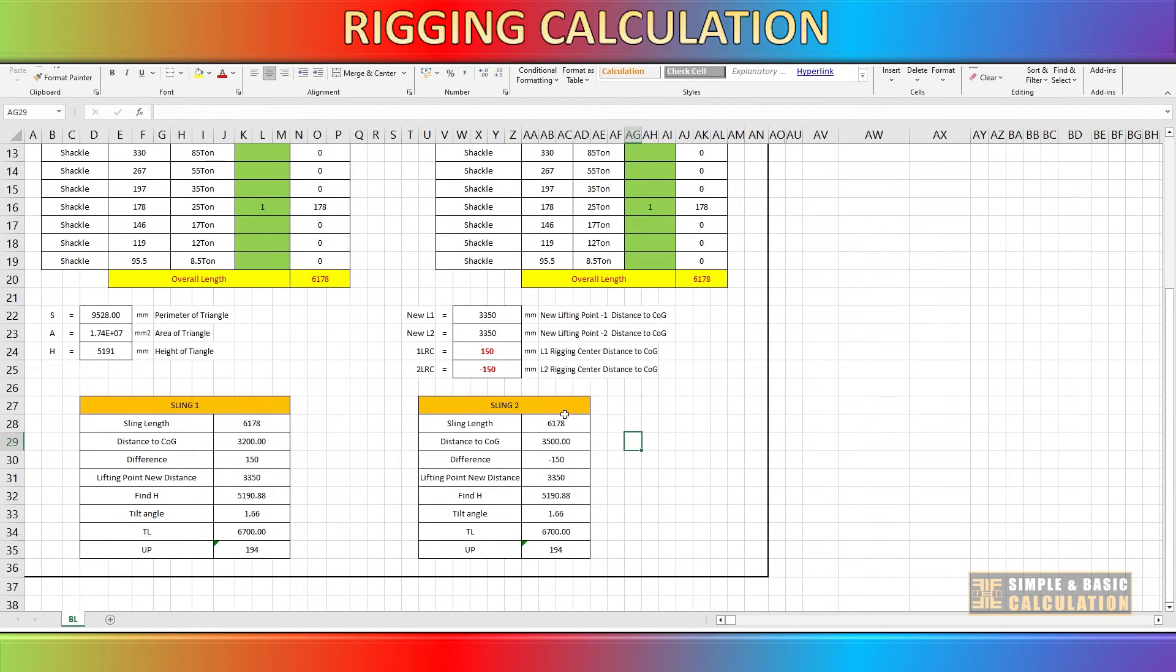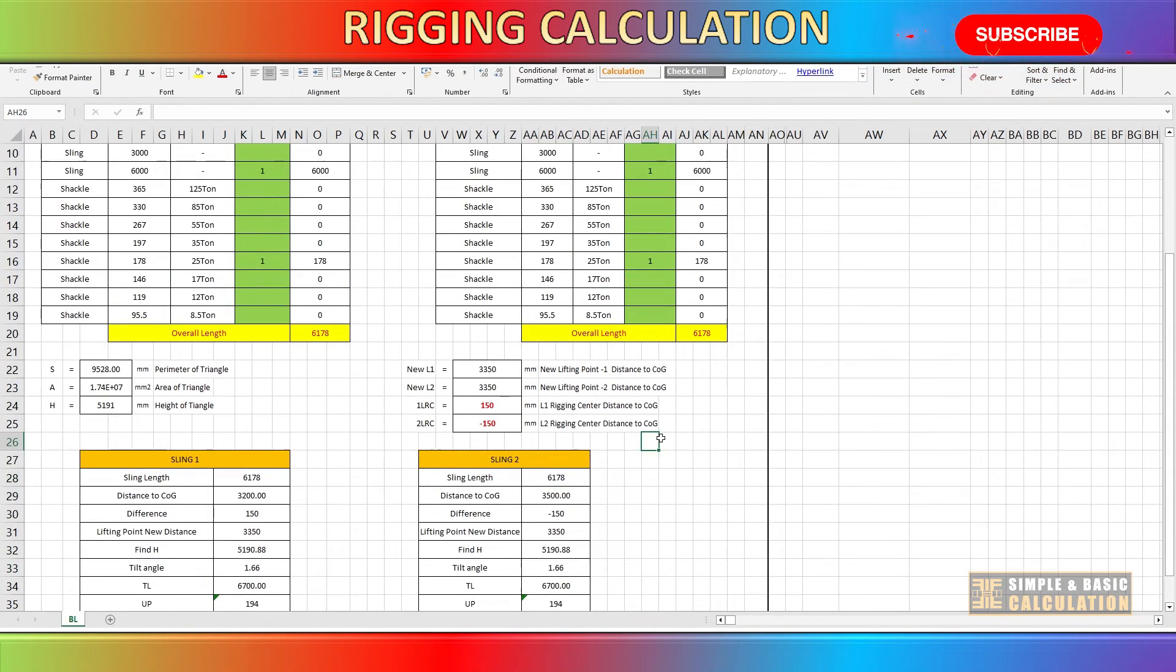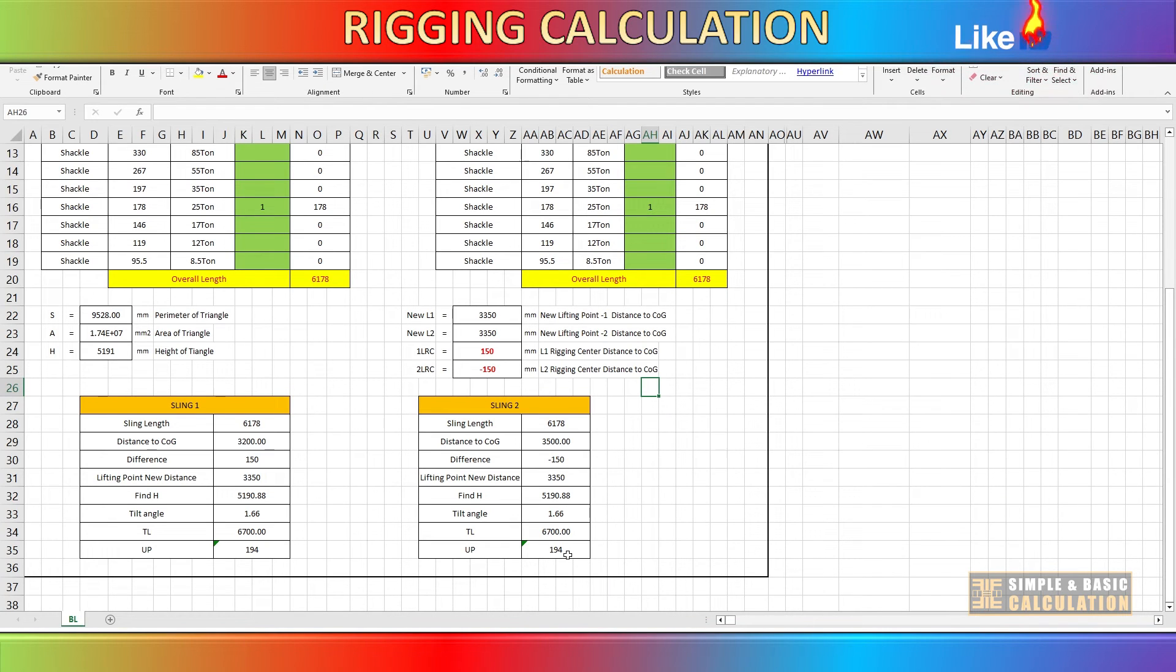You can use trial and error in this spreadsheet, until you get the closest value or lowest value where the center line of rigging is close to the cargo center of gravity.